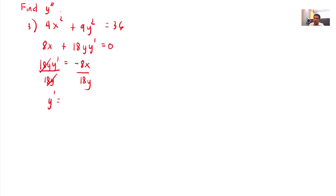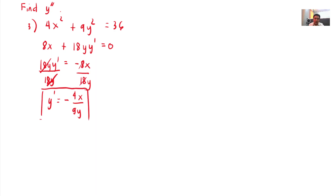Y prime equals negative 8 over 18, simplified to negative 4x over 9y. So the first derivative is negative 4x over 9y. Now we solve for the second derivative y double prime. We apply quotient rule again.